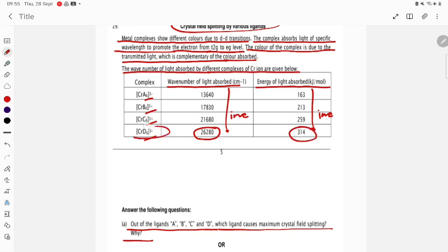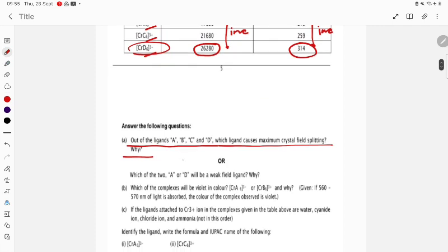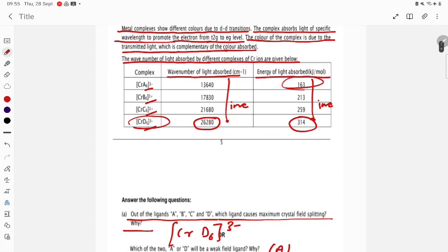So the correct option will be [CrD6]³⁻. This is [CrD6]³⁻. Now which of A or D will be a weak field ligand? That is obviously A will be weak field ligand because the energy is very less.